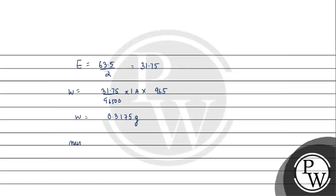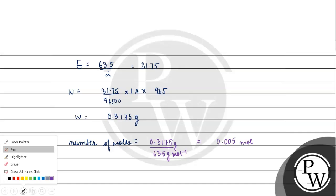Now we have number of moles. Number of moles will be equal to 0.3175 gram divided by 63.5 gram per mole. It is basically equal to 0.005 moles.